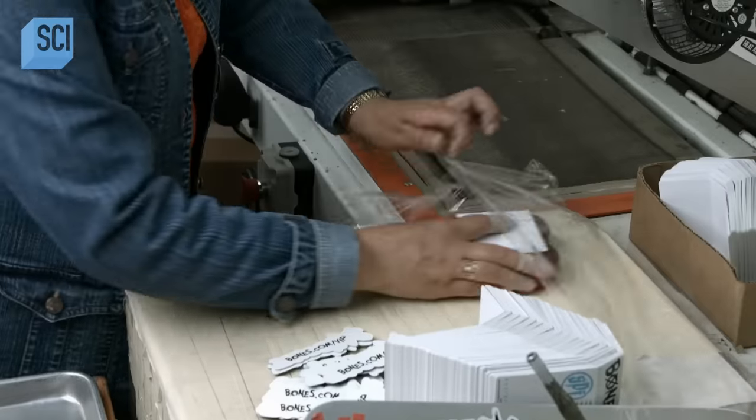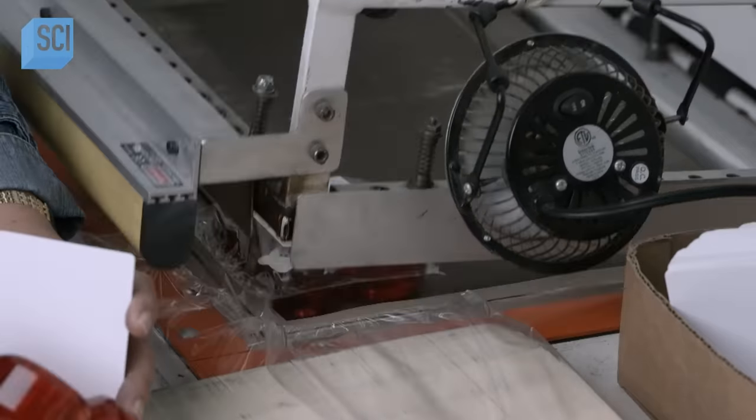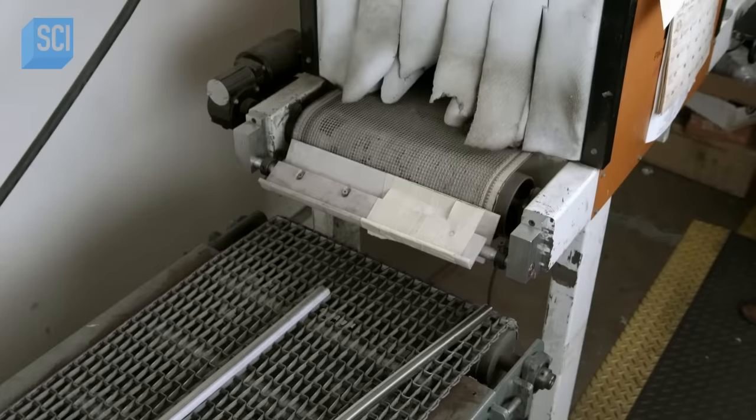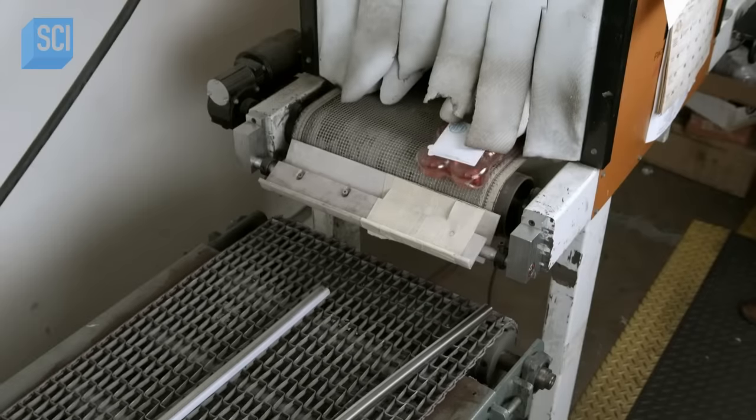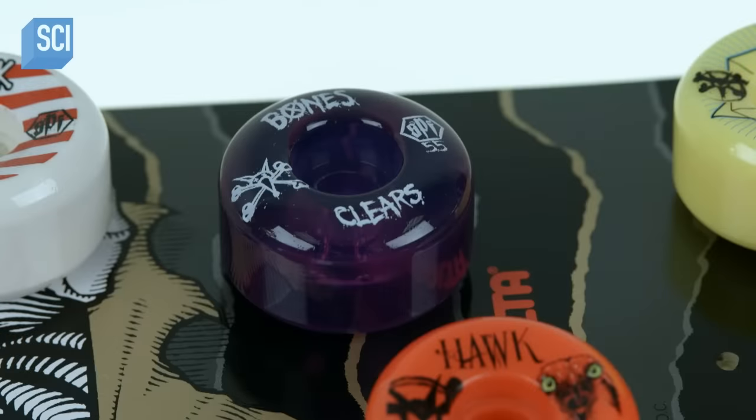They wrap them in plastic and heat shrink it. It has taken about three days to make these skateboard wheels. How long they'll last depends a lot on the rider and how he or she rolls.